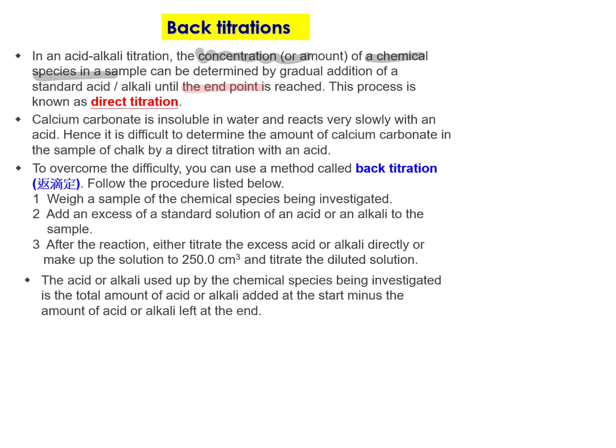But we have some other situations where we cannot find the concentration of a chemical species directly. So we have to use back titration. For example, calcium carbonate is insoluble in water and reacts very slowly with an acid. So it is difficult to determine the amount of calcium carbonate in a sample of chalk by direct titration with acid. So we have to use back titration.